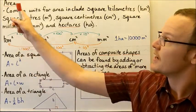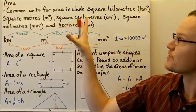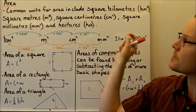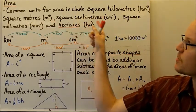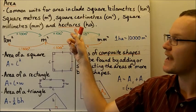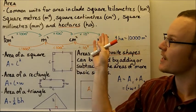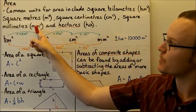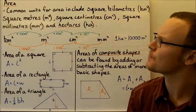Today we're going to look at area. Common units for area include square kilometres, square metres, square centimetres, square millimetres, and hectares (ha). These are the different abbreviations for each of the different units.